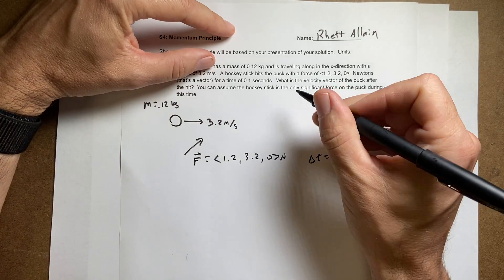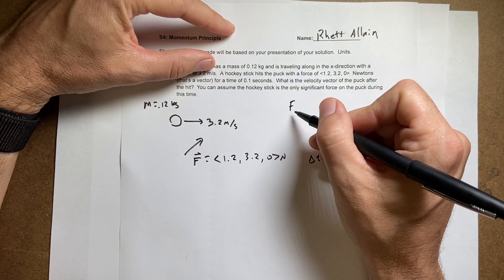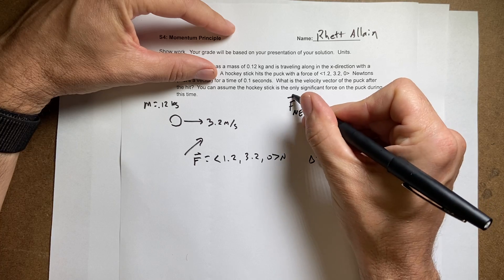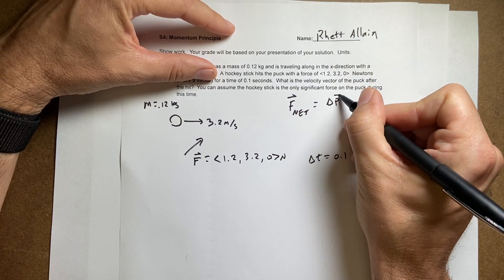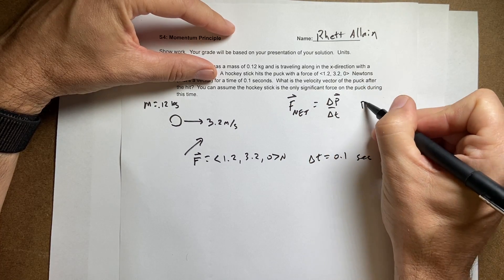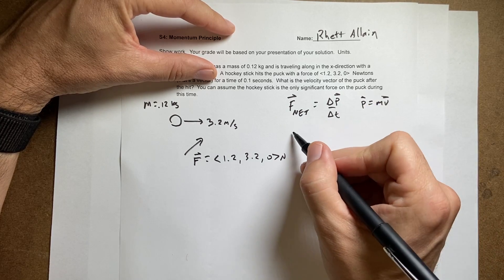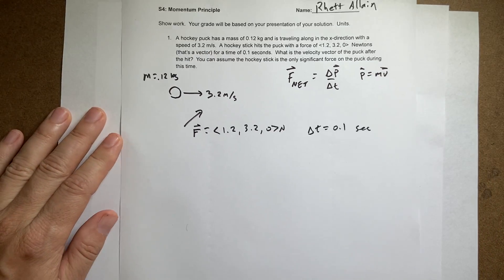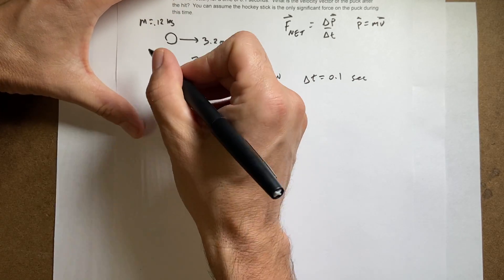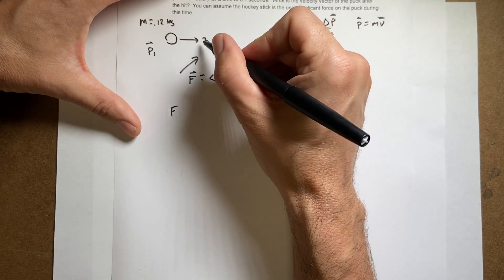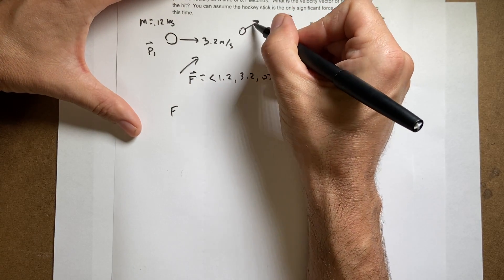This is going to use the momentum principle. The momentum principle says F_net is delta P over delta T, or P equals MV. Let me write this down here. So I can write F_net. This is called P1. Then it's going to get hit and be going like that. P2.